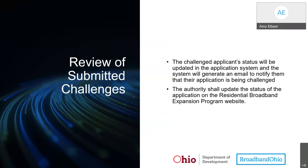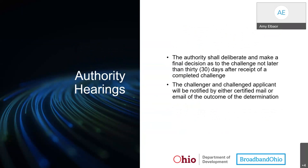The challenged applicant's status will be updated in the application system, and the system will generate an email to notify them that their application is being challenged. The authority shall update the status on the Broadband Ohio Expansion Program website. The authority shall deliberate and make a final decision on the challenge no later than 30 days after receipt of a completed challenge. The challenger and challenged applicant will be notified by certified mail or email of the outcome.